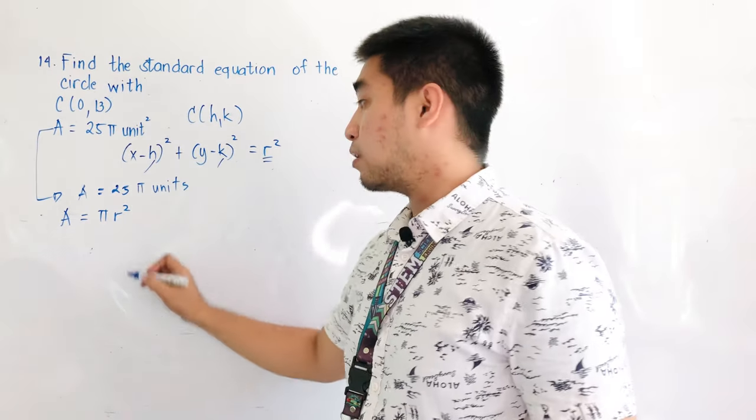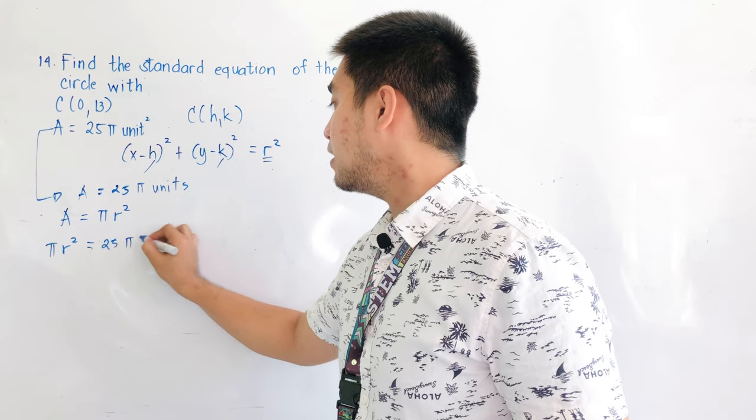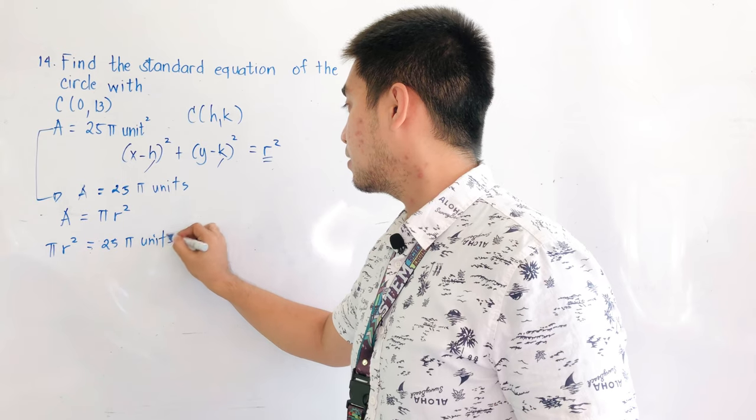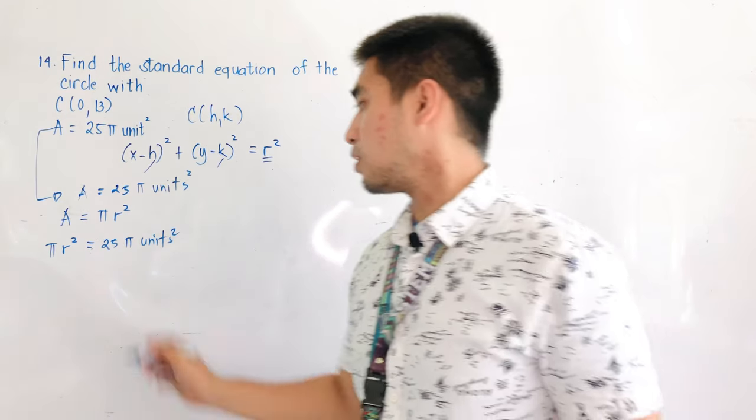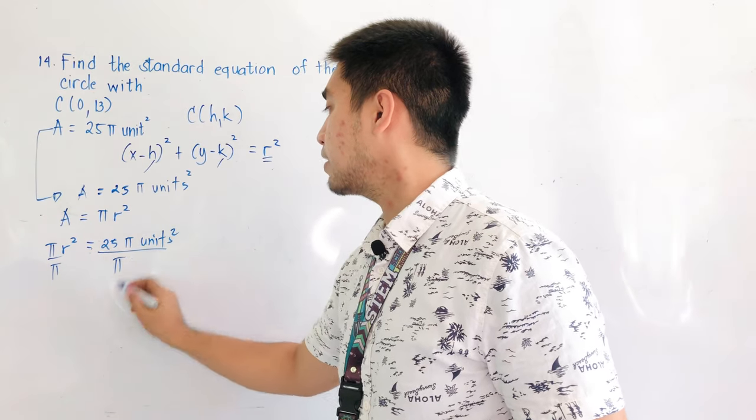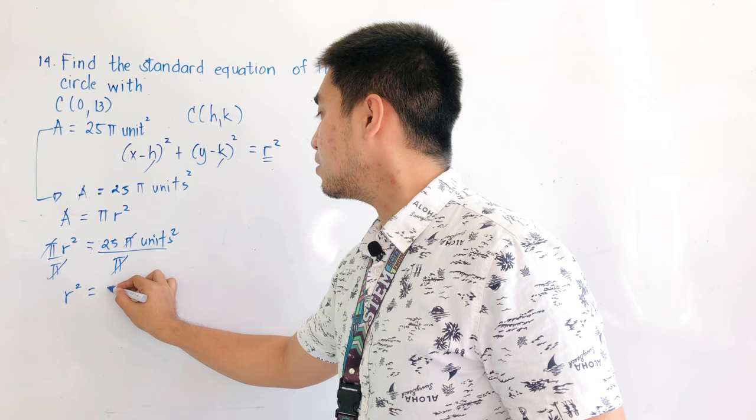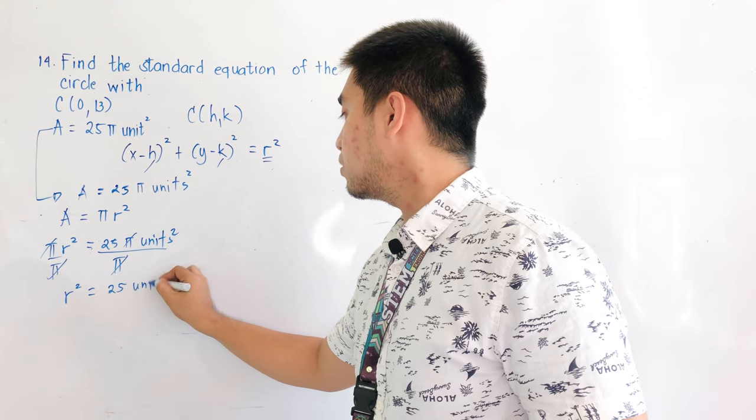Equate both equations. So we have pi r squared is equal to 25 pi units squared. Divide both sides by pi. Cancel pi. Therefore, r squared is equal to 25 units squared.